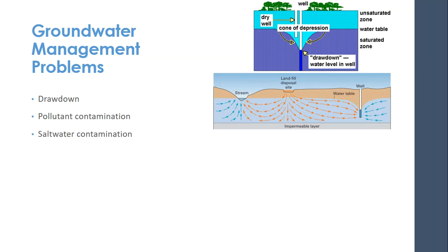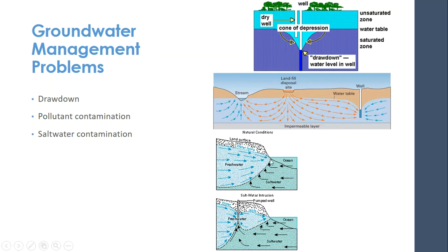We can also have problems with saltwater contamination. Saltwater is denser than freshwater because it has salt in it. Right on the ocean, you tend to have a nice barrier where there's not a lot of mixing — saltwater doesn't get into the freshwater because it's on top and it's denser. But if you start pumping, you can pull saltwater into your freshwater. This is also going to be a problem with climate change as sea levels rise — places that had freshwater wells might find salt in their wells.